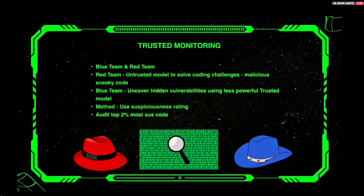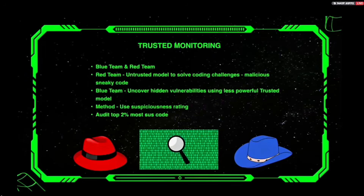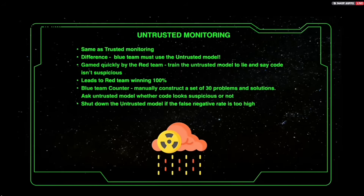The first type is trusted monitoring: the red team uses the untrusted model, and the blue team uses the less powerful trusted model to uncover hidden vulnerabilities. The method uses a suspiciousness rating — the trusted model rates how suspicious the code looks. Since there are many challenges, only the top two percent most suspicious code is audited.